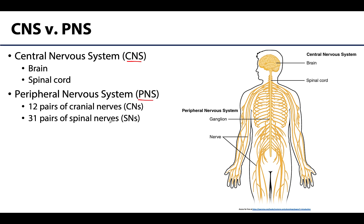The PNS will be organized into specific ganglia, which we'll get into in other videos, but also importantly, 12 pairs of cranial nerves and 31 pairs of spinal nerves that will connect the central nervous system with peripheral structures like viscera, muscles, glands, skin, etc.